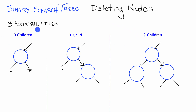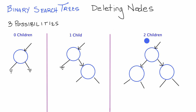In the first case, the node that we want to delete may not have any children. In the second case, our node may have one child, and in the third case, the node that we want to delete might have two children. So depending on which one of these three situations we run into, we're going to delete the node in a different way.